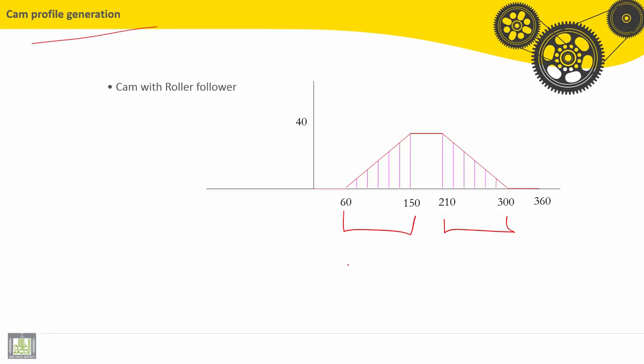Here we have to divide it into 6 intervals. Each one will be 15 degrees. Let's now start by drawing the axis of the cam. This is the axis of the follower.